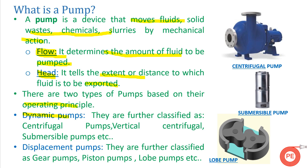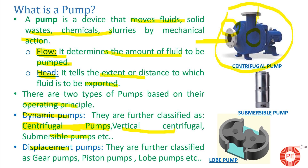Depending upon operating principle, pumps are of two types: dynamic pumps and displacement pumps. Dynamic pumps are further classified as centrifugal pumps, vertical centrifugal pumps, submersible pumps, vertical turbine pumps, and others. 80 to 90 percent of pumps used in industries are centrifugal pumps, preferred for their low operating cost and low capex. Centrifugal pumps come in two configurations: front suction top discharge, and side suction side discharge.